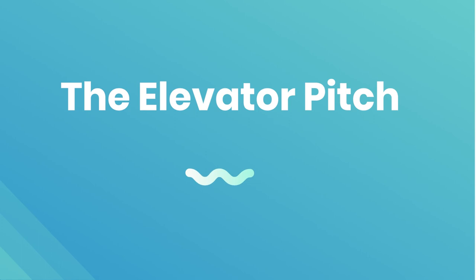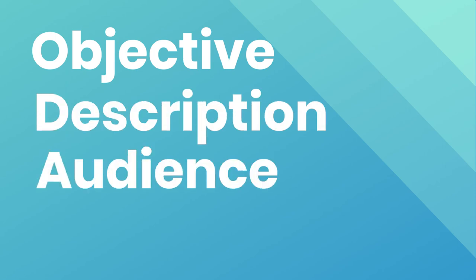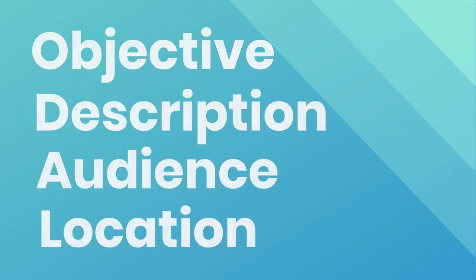Once you've filled out all these ideas and have a sense of what you want, you're going to create an elevator pitch. An elevator pitch or log line is a brief — usually one sentence — synopsis of a production's story or purpose to stimulate interest. Look at your worksheet and think about how you would summarize your production. For example, if you want to do a crafting show, you could say: this is a 30-minute crafting show for people of Longmont who are super interested in being creative. By knowing your objective, description, audience, and location, you know what you need for next steps.